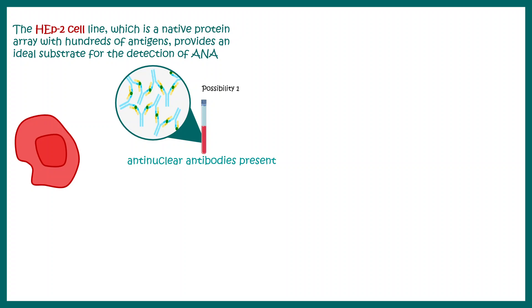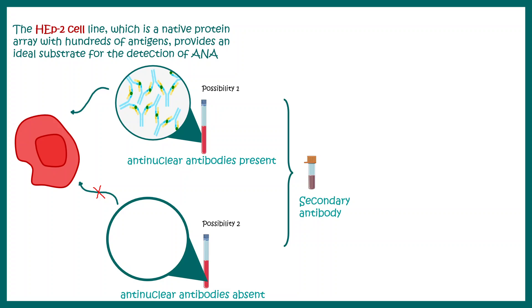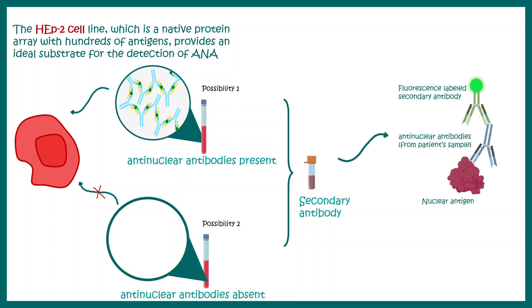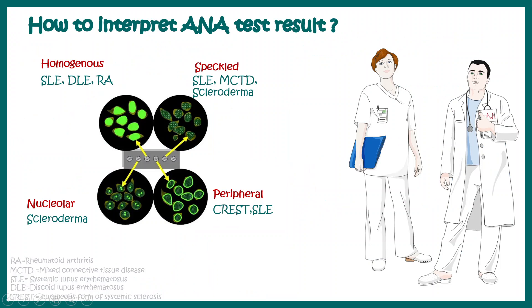HEp-2 cell lines are enriched in nuclear antigens. You take a sample from the patient — it may or may not contain anti-nuclear antibodies. You place this patient sample on the cell culture and perform immunofluorescence. If there is an anti-nuclear antibody, a fluorescent secondary antibody will detect it and produce fluorescence. By looking at the fluorescent pattern, one can determine whether there is an autoimmune disorder, and the pattern correlates with specific diseases.